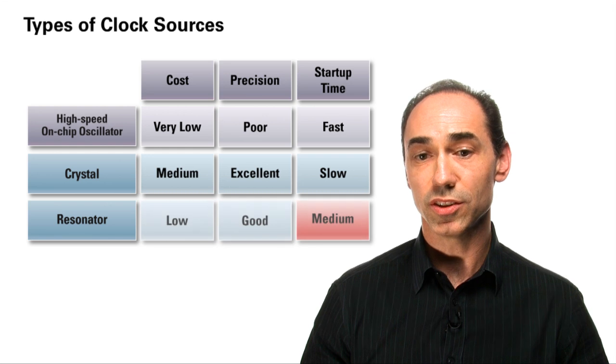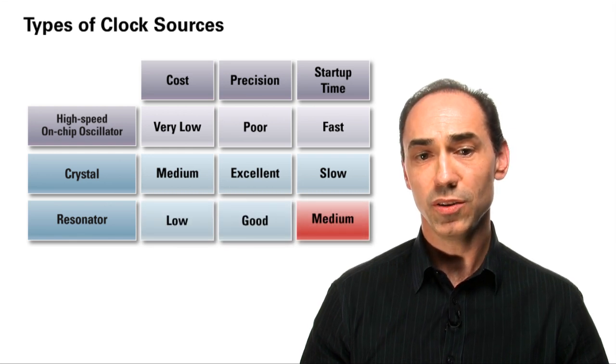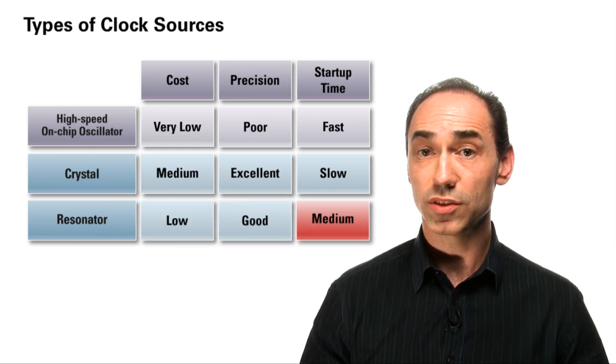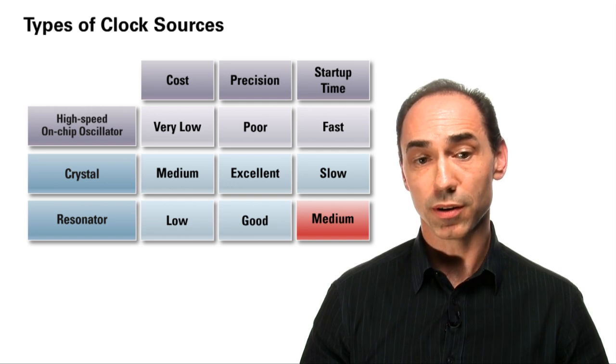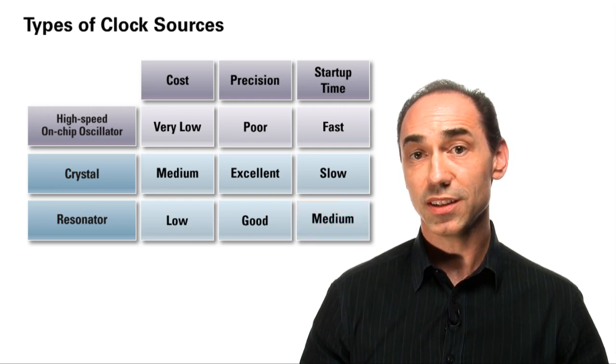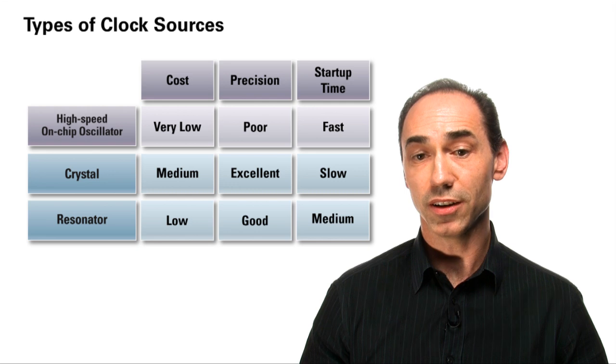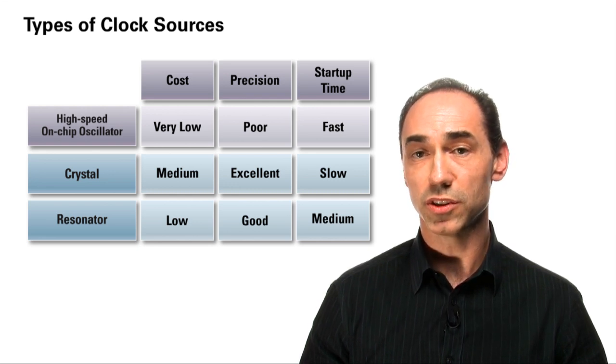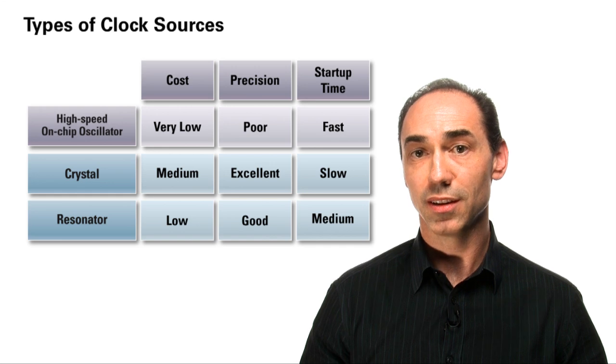External resonators are sometimes used instead of crystals in order to save cost, or more commonly to improve startup time in order to save power. The RX 630 supports all three clock sources, giving embedded developers the flexibility to use the clock source which is best suited for their application.